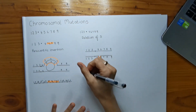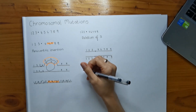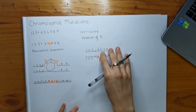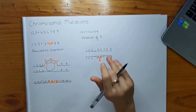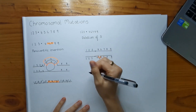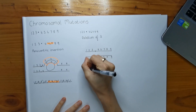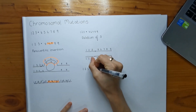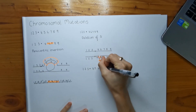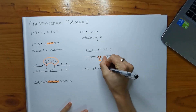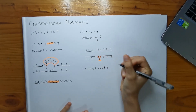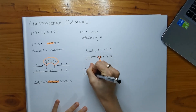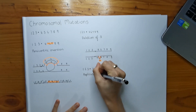Now I'm going to do part D first because it's very similar to the deletion type of question. The sequence is one, two, three, centromere, then four, five, and six occurs twice, seven, eight, nine. So obviously this is a duplication - specifically a duplication of the sixth gene.